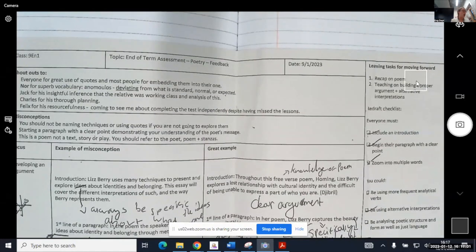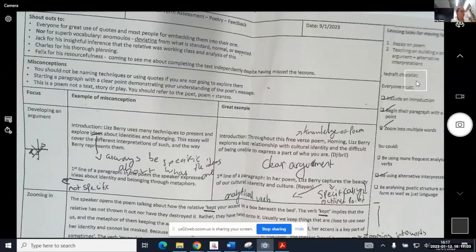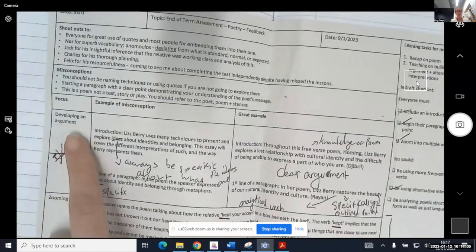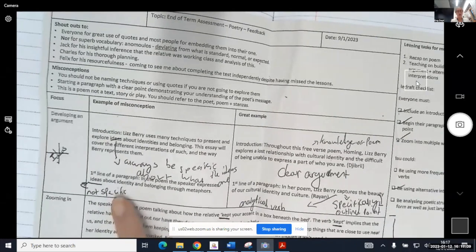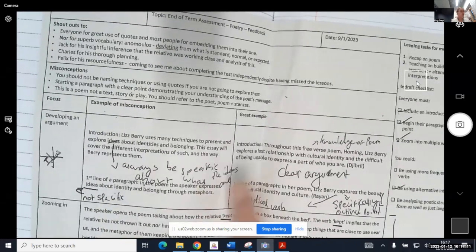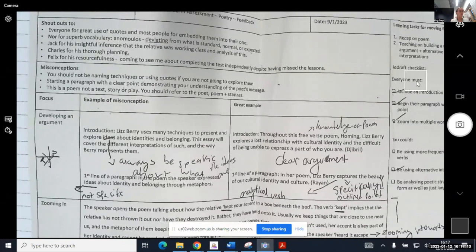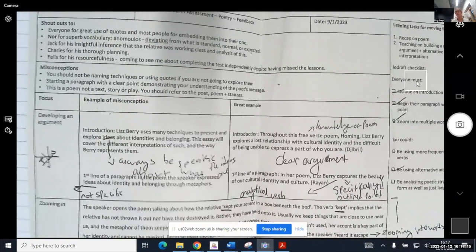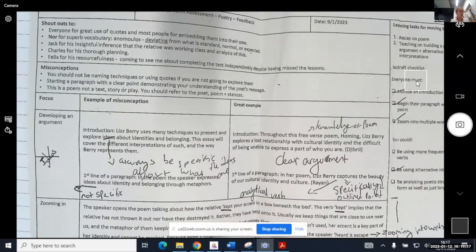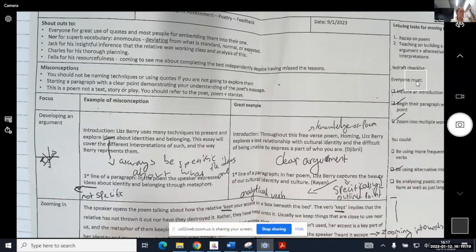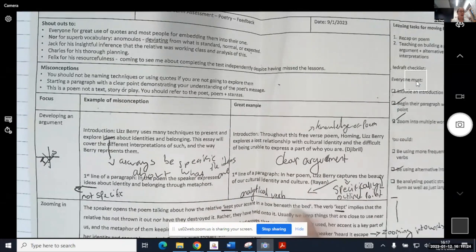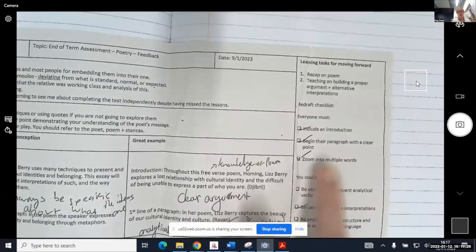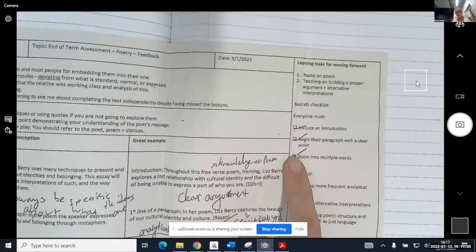And here it was on making sure they had really developed arguments through clear points at the beginning of their paragraphs and powerful introductions, and also making sure that they're really zoomed in on words that the poet had used. So I modeled this and gave examples of misconceptions and good examples, and they also had a checklist of what absolutely everyone needed to have included.